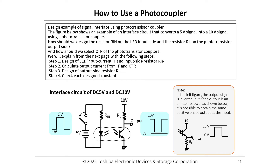How to use a photocoupler — design example of a signal interface using a phototransistor coupler. The figure shows an example of an interface circuit that converts a 5V signal into a 10V signal. The design covers: Step 1 — design of LED input current IF and input-side resistor RIN; Step 2 — calculate output current from IF and CTR; Step 3 — design of output-side resistor RL; Step 4 — check each design constant.